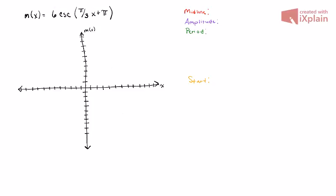The particular function that we have here is m(x) equals 6 times the cosecant of pi thirds x plus pi.